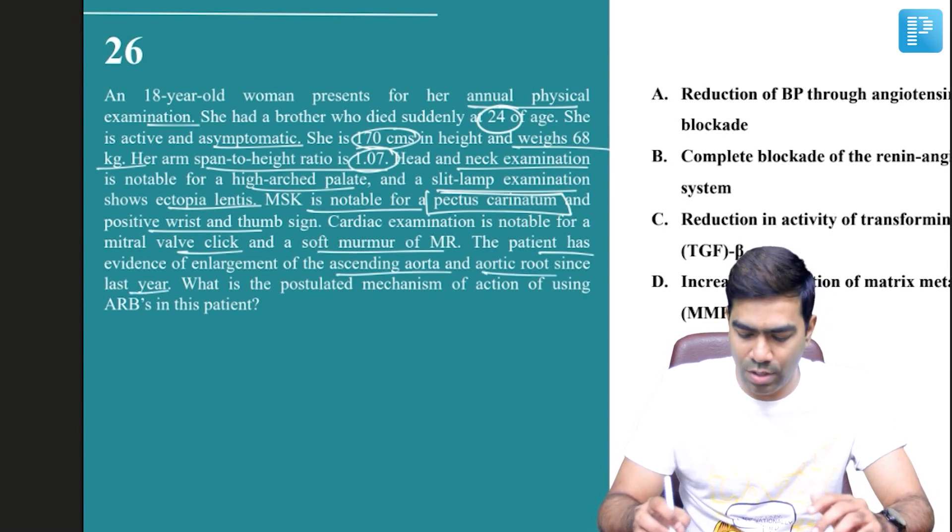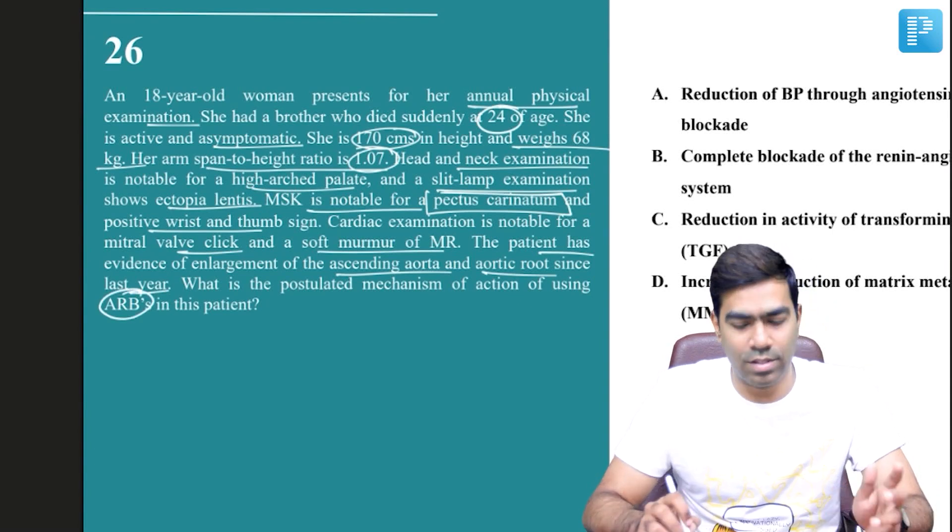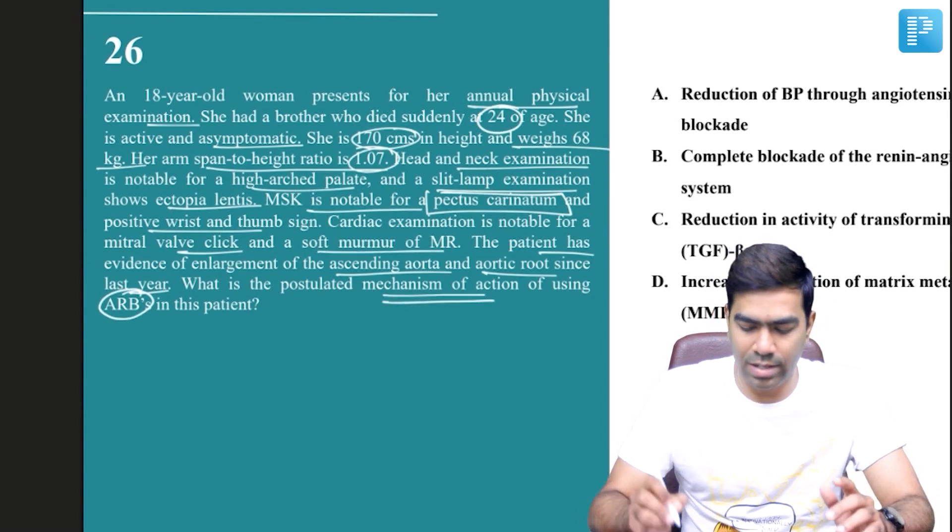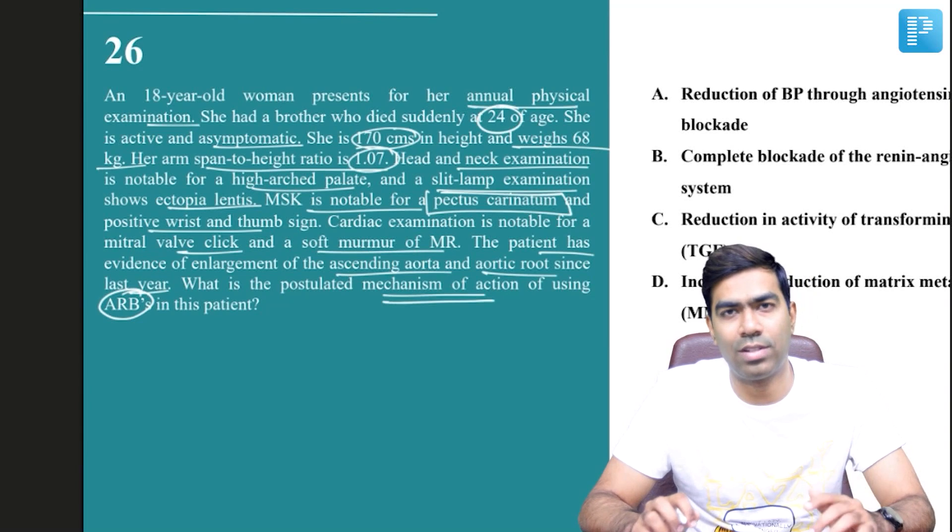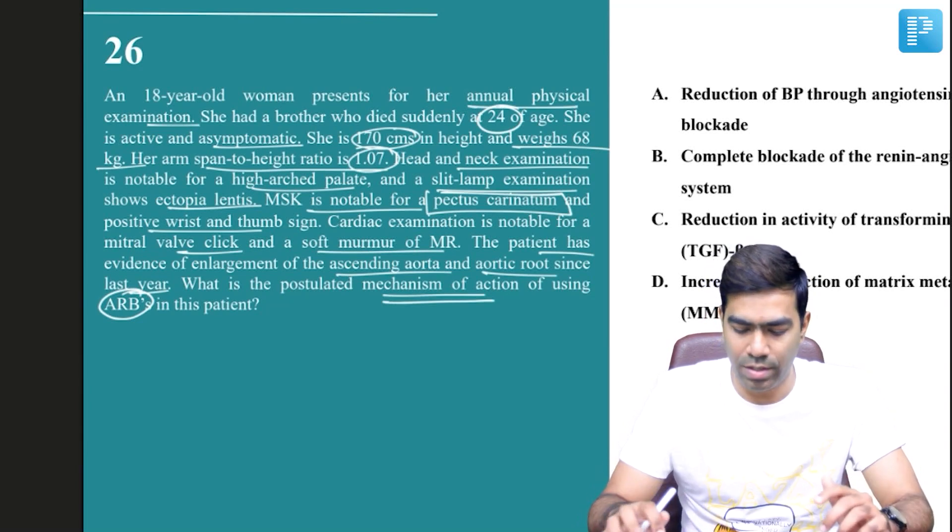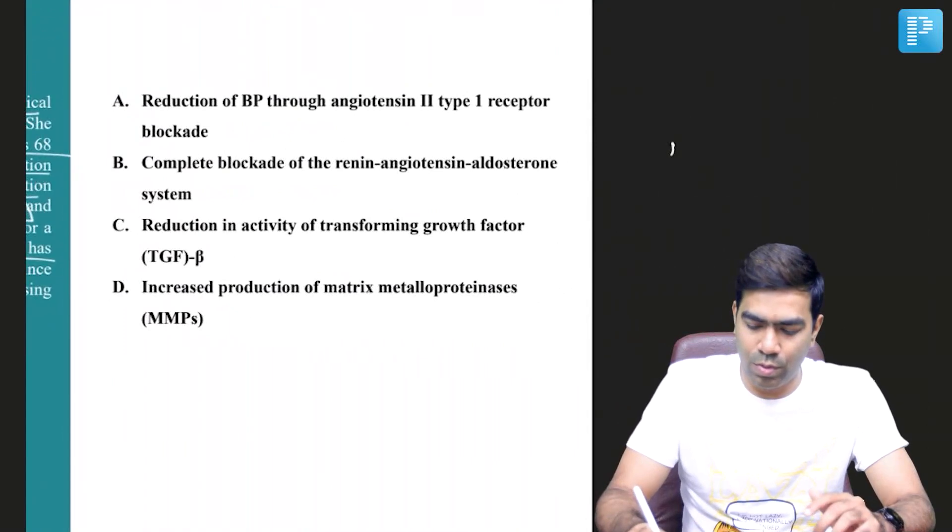The patient has evidence of enlargement of ascending aorta and aortic root since last year. Now they wanted to use ARBs in this individual. What is the postulated mechanism of using angiotensin receptor blockers in this individual?